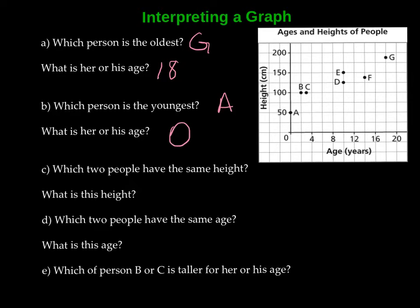Alright, now which two people have the same height? So here, we're looking on the height, and we're looking to see across if there are two dots that are exactly at the same number. And we see here that person B and C, B and C have the same height. What is their height? Well, they are both 100 centimeters. And you simply look across to see what their height is.